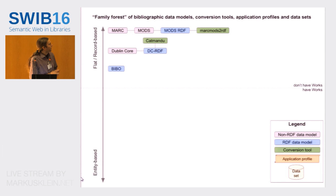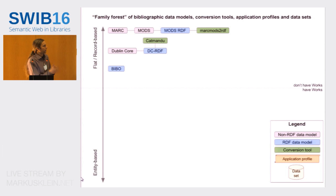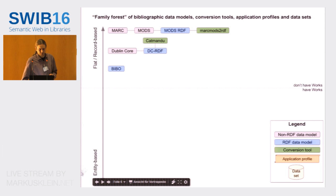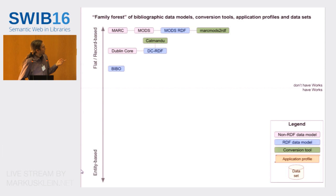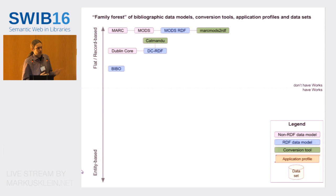Among the flat data models, there's MARC, and there's not really a good RDF representation of MARC — there have been a few attempts but it's kind of difficult, the thinking is so different. There's MODS, which models pretty much the same things as MARC, and there's an RDF representation of that. There's also a conversion tool called MARC-MODS-to-RDF that can go from MARC to MODS and then to MODS RDF. Then there's Dublin Core and DC Terms, which has an RDF representation, and Catmandu is one of the tools that can convert, for example, from MARC to DC.